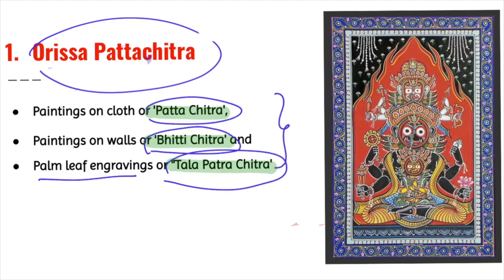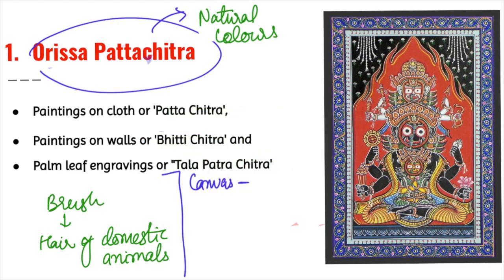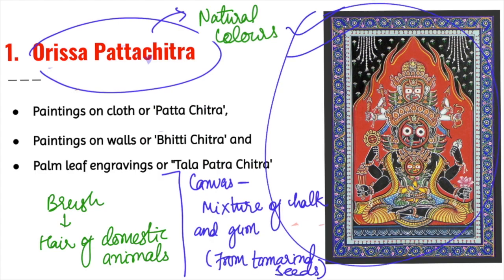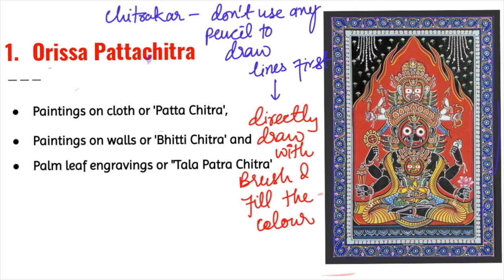Patachitra painting is done using natural colors. The Chitrakaras make brushes from the hair of domestic animals. To prepare the canvas, they coat the cloth with a mixture of chalk and gum made from tamarind seed, then rub the cloth with stones to give it a leathery finish. Notably, these painters do not use any pencil or charcoal for drawing — they directly draw with a brush and then fill in the color.